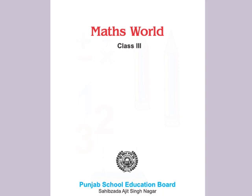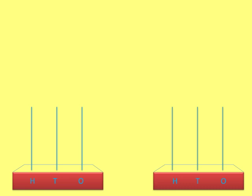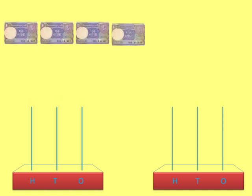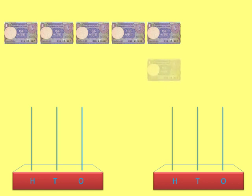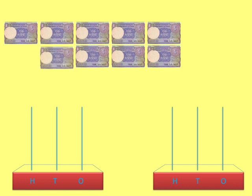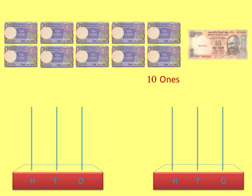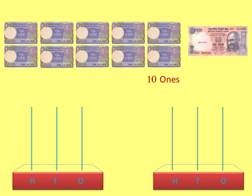Dear students, let's take some 1-rupee notes. It is 1, 2, 3, 4, 5, 6, 7, 8, 9 and 10. So 10 notes means 10 ones. Therefore, 10 one-rupee notes are equal to 1 ten-rupee note — that is 1 ten.